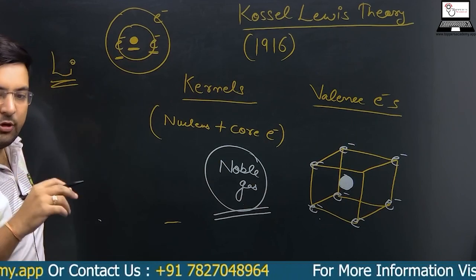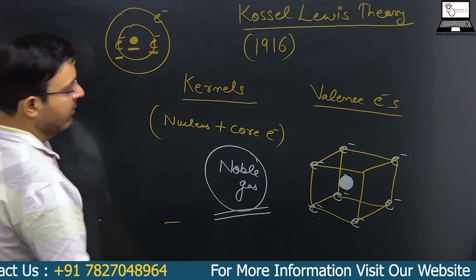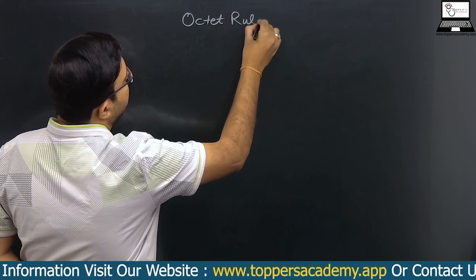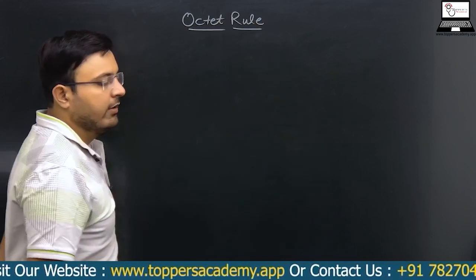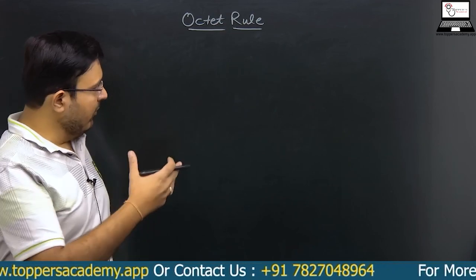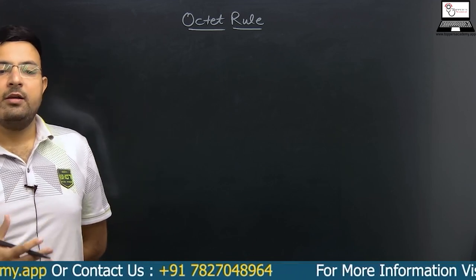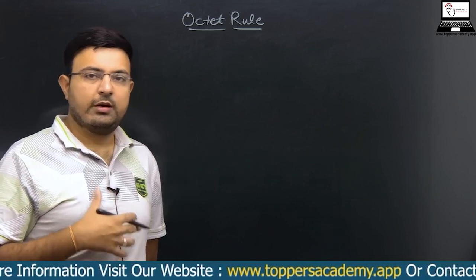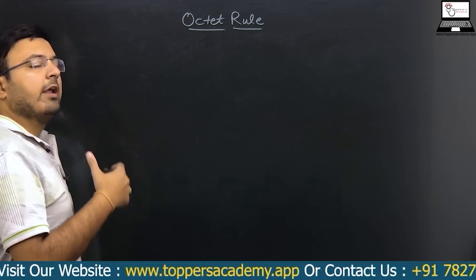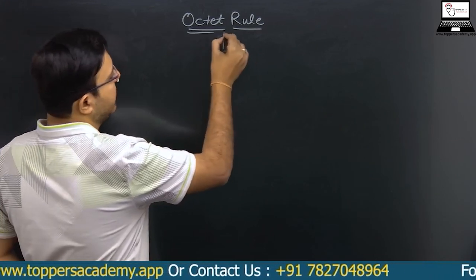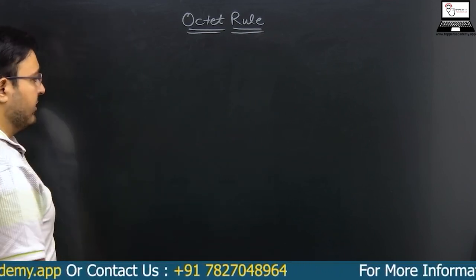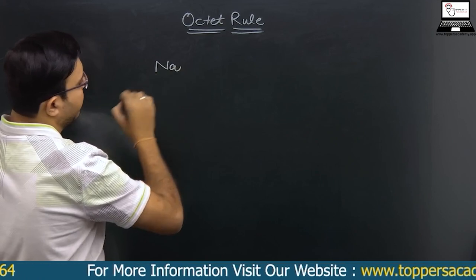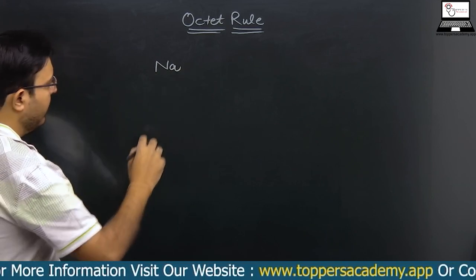This noble gas configuration led to the rule of eight, and the presence of eight electrons in the valence shell has been termed the octet rule. The octet rule states that each atom or ion tends to have eight valence electrons in order to attain stability. When an atom or ion has eight electrons in its valence shell, it is said to have completed its octet.